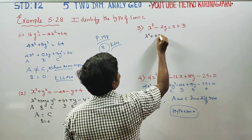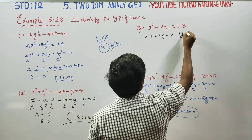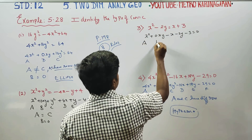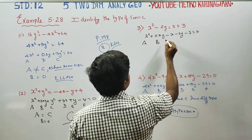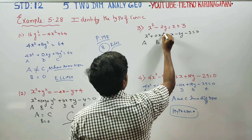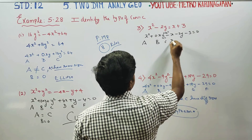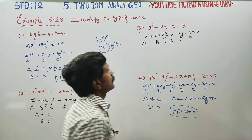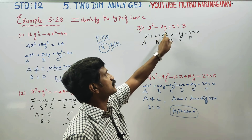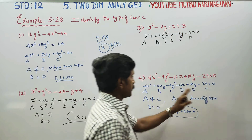The next equation has an xy term: 4xy. The equation is: x square plus 4xy plus y square minus 2y minus 3 is equal to 0. Here a, b, c, d, e, f are identified: a is the coefficient of x square, b is the coefficient of xy, c is the coefficient of y square, d and e are coefficients of x and y, and f is the constant.